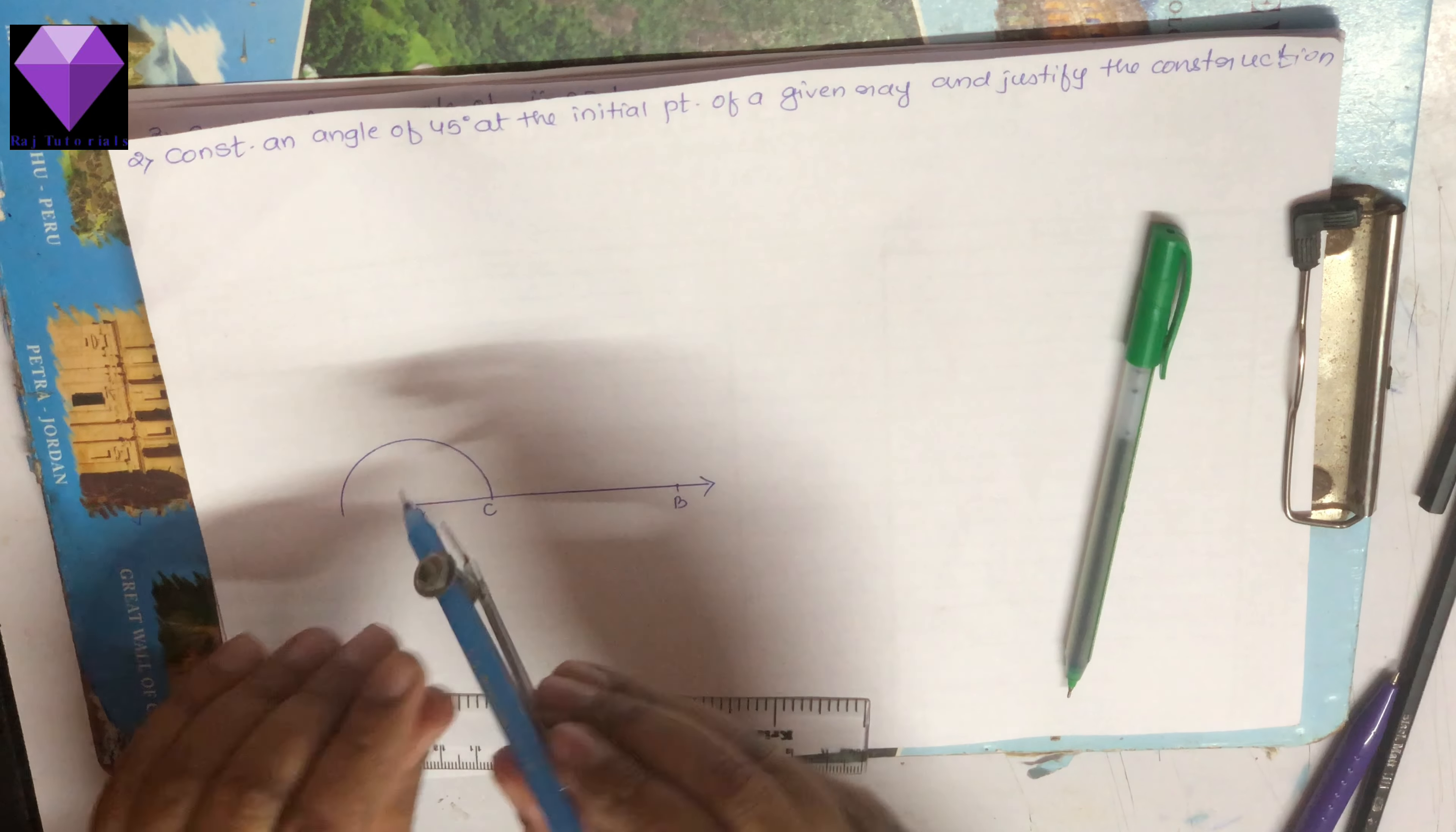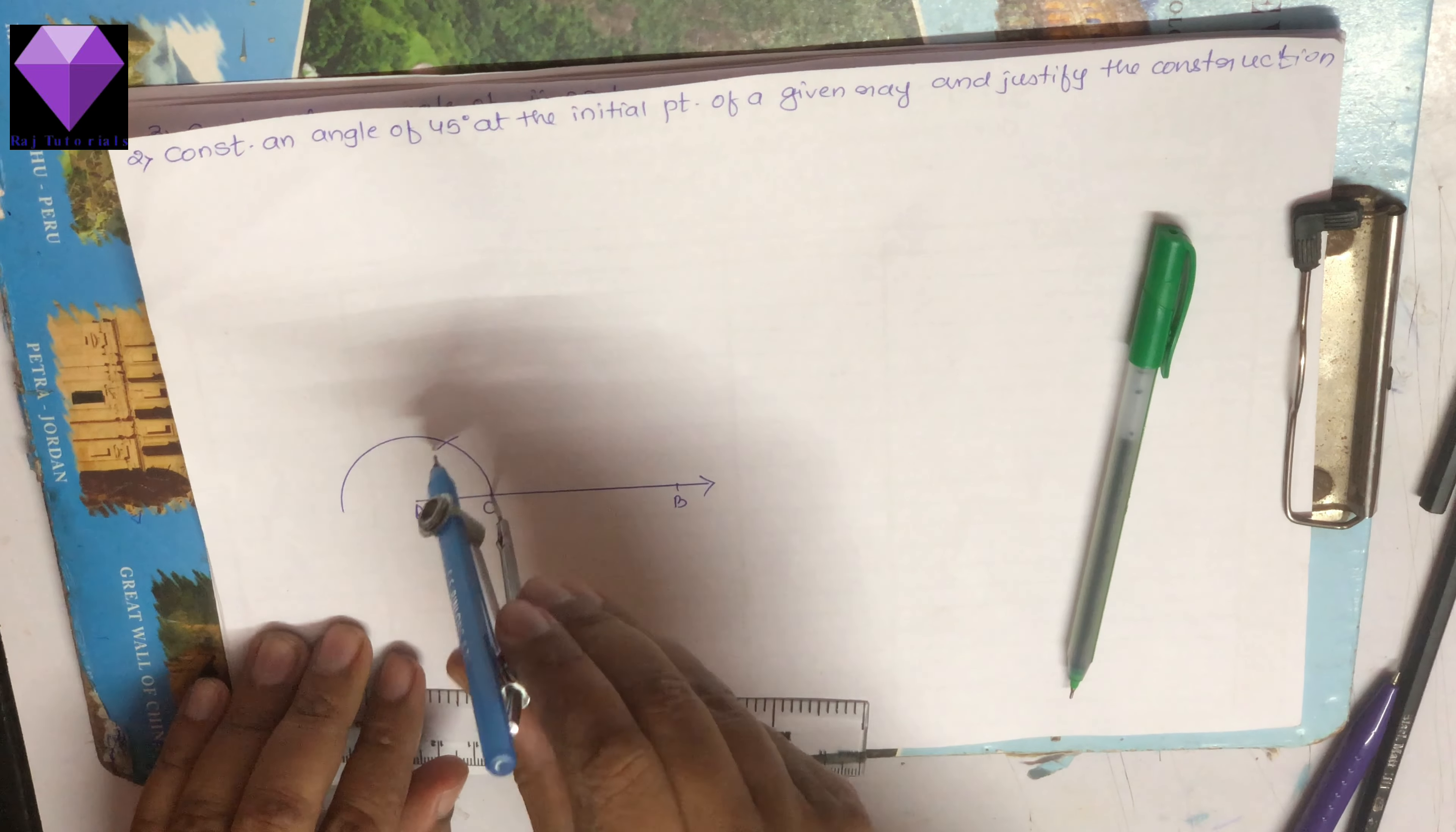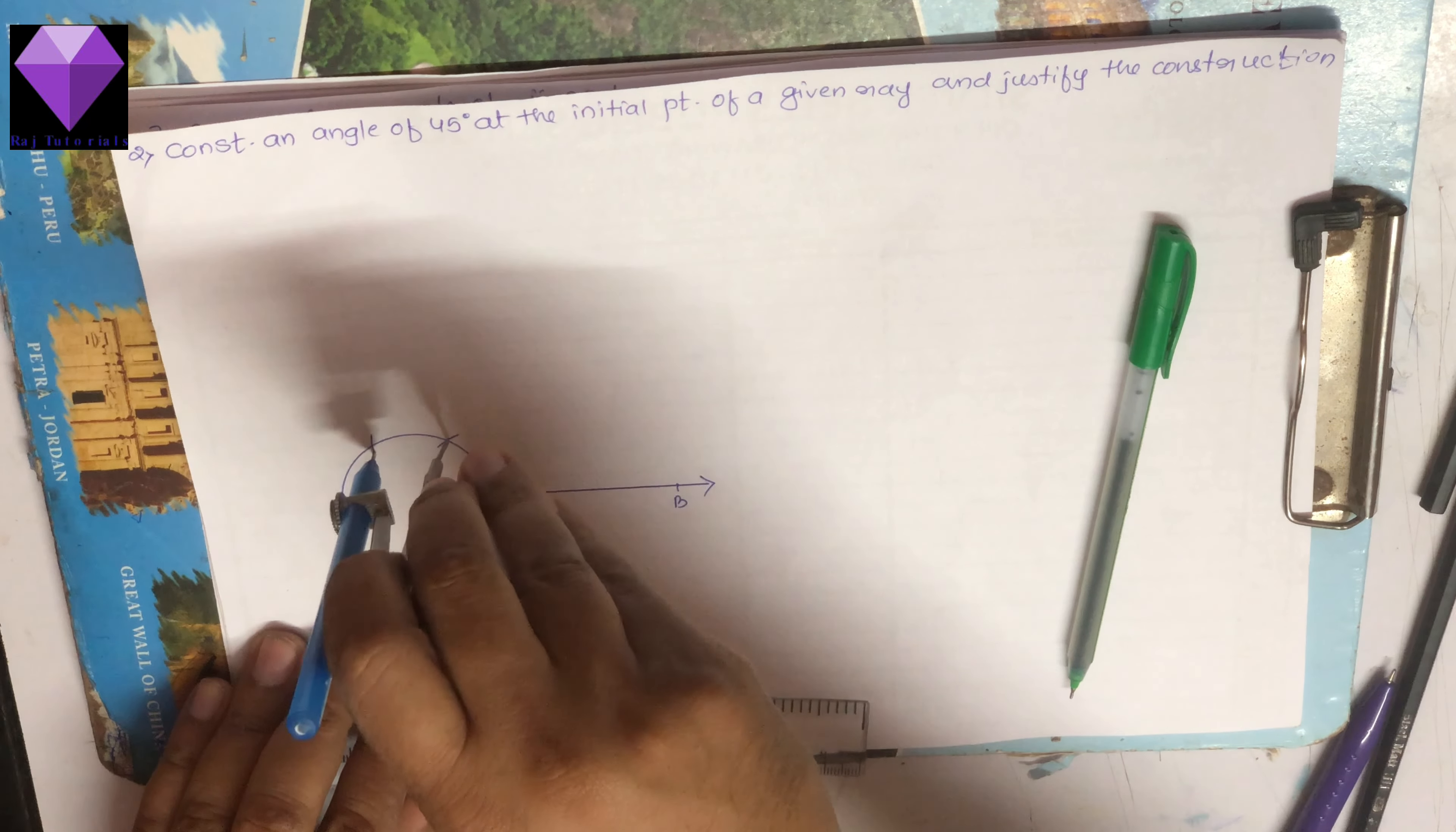Now with C as center and the same radius, I am marking one point D, and with D as center, I am marking one point E.